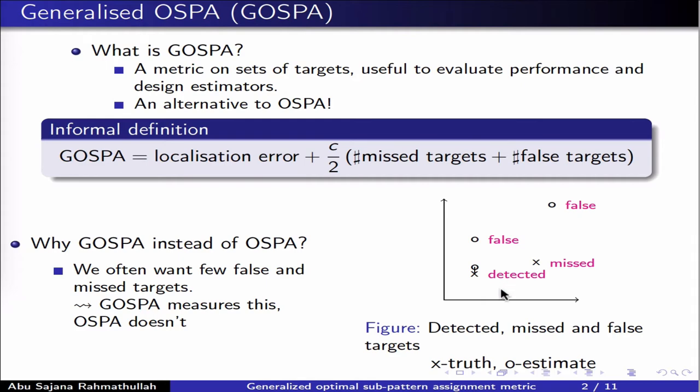As you can probably understand, measuring distances between sets is a bit more involved compared to distances between vectors, since sets are not ordered and the number of elements in the sets may differ.